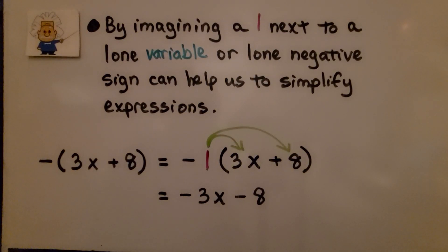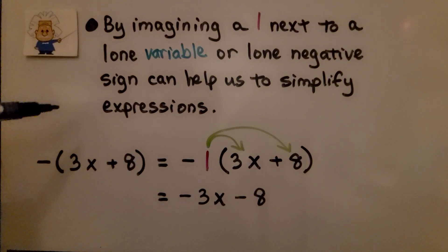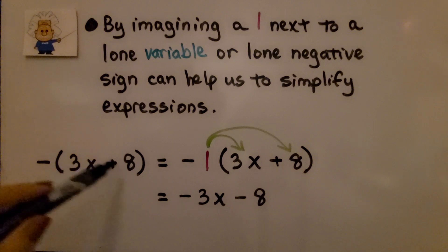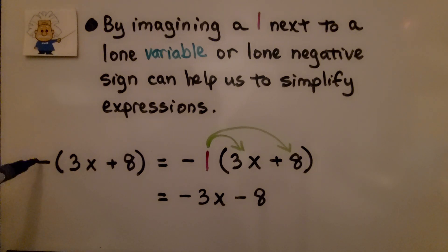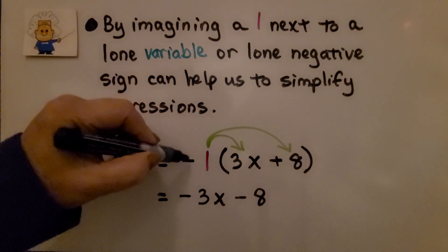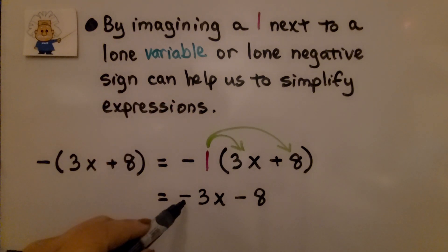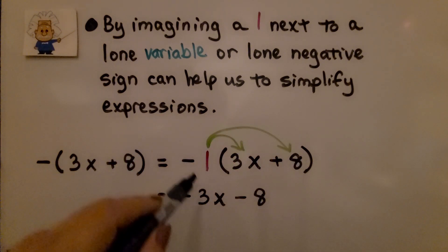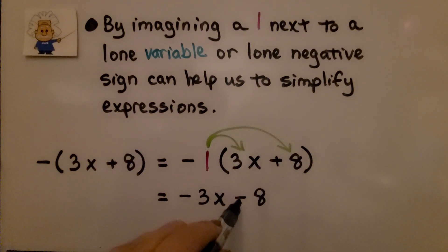Imagining a 1 next to a lone variable or lone negative sign helps us simplify expressions. We have a negative outside the parentheses and 3x plus 8 within. We distribute the negative sign by imagining a negative 1: negative 1 times 3x gives negative 3x; negative 1 times positive 8, unlike signs, gives negative 8. So we have negative 3x minus 8.